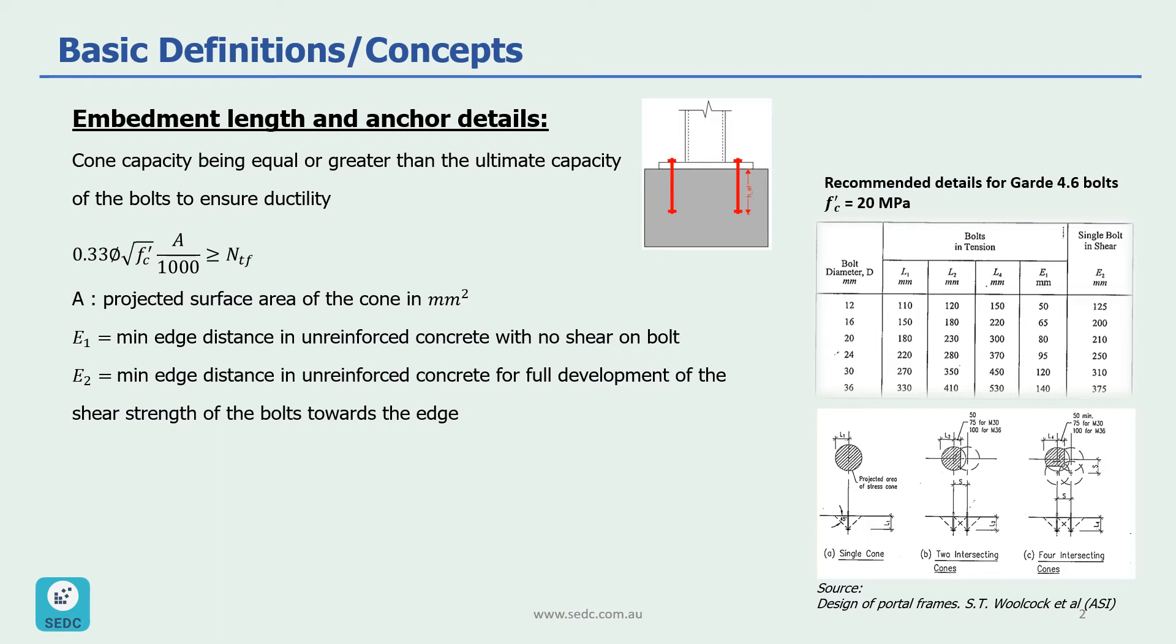As you might remember from the previous slide, the cone capacity was 0.335√f'c times A which is projected surface area of the cone which needs to be equal to or greater than Ntf which is ultimate capacity of the bolts. Based on this, area can be calculated for single cone, two intersecting cones, or four intersecting cones.